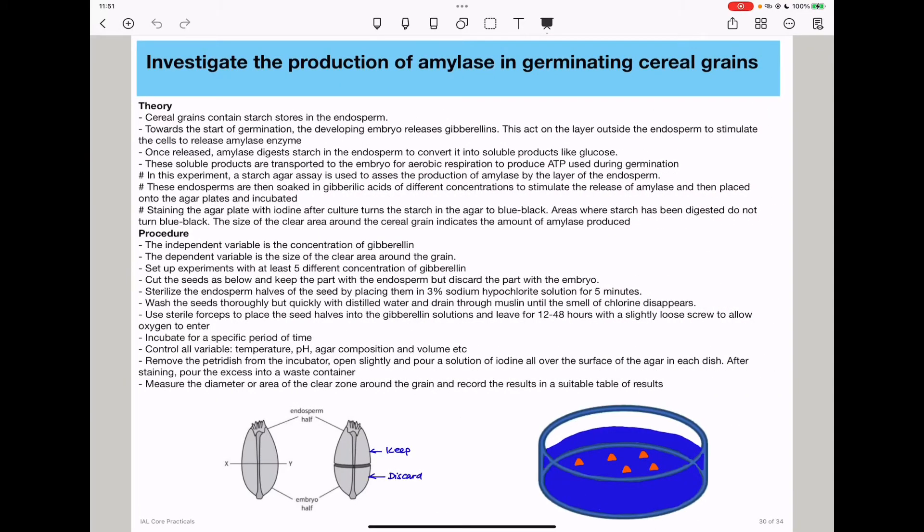In this experiment, the seed contains an embryo and an endosperm. In cereal grains, the endosperm is where starch is stored. During germination, the developing embryo releases gibberellins, which act on the layer outside the endosperm to stimulate the release of amylase.